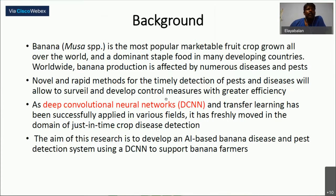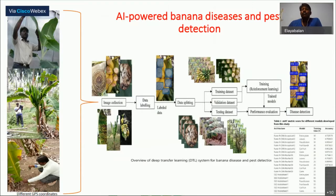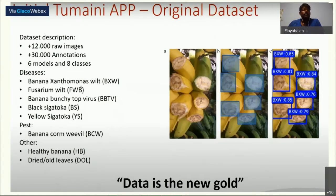What we developed: first, we collected a database of more than 12,000 images in different classes. Then we did data labeling, splitting the data for validation and performance testing of our app — accuracy is the foremost important. Most classifications achieved more than 90% accuracy. We have 12,000 raw images, 30,000 annotations, and six models. Internationally, banana has many fungal, bacterial, and viral diseases — Fusarium wilt, Banana Bunchy Top Virus, Black Sigatoka, and Yellow Sigatoka.